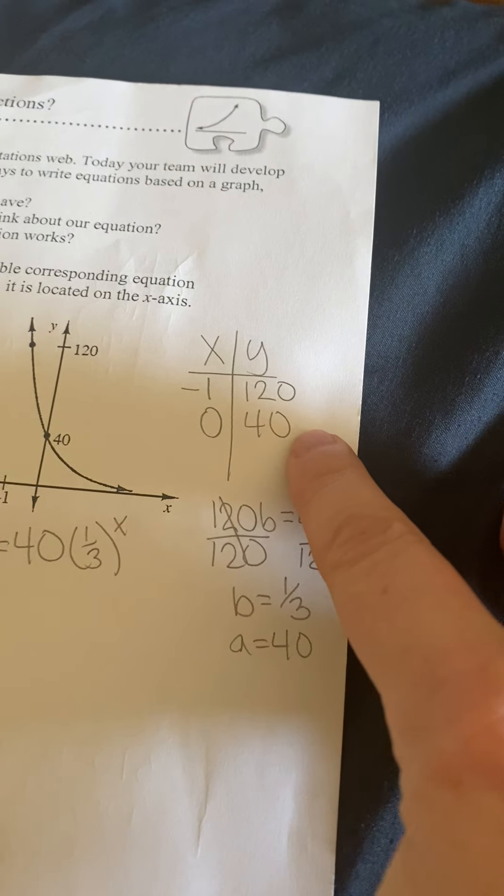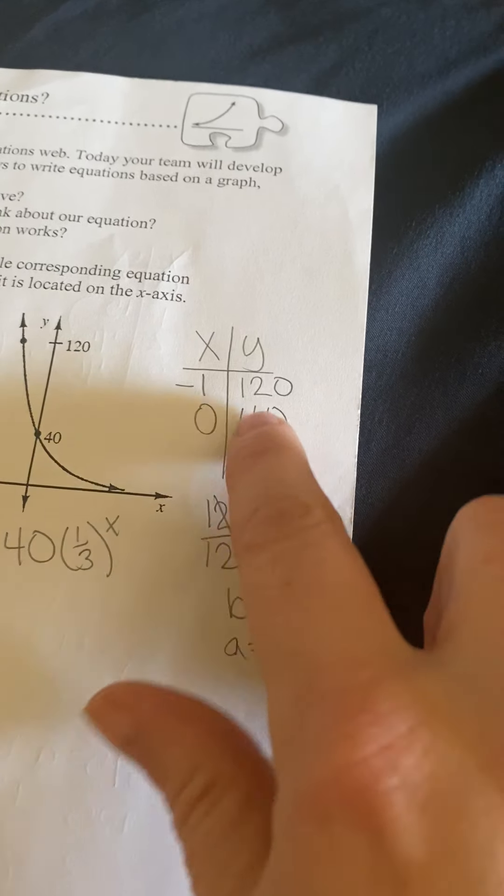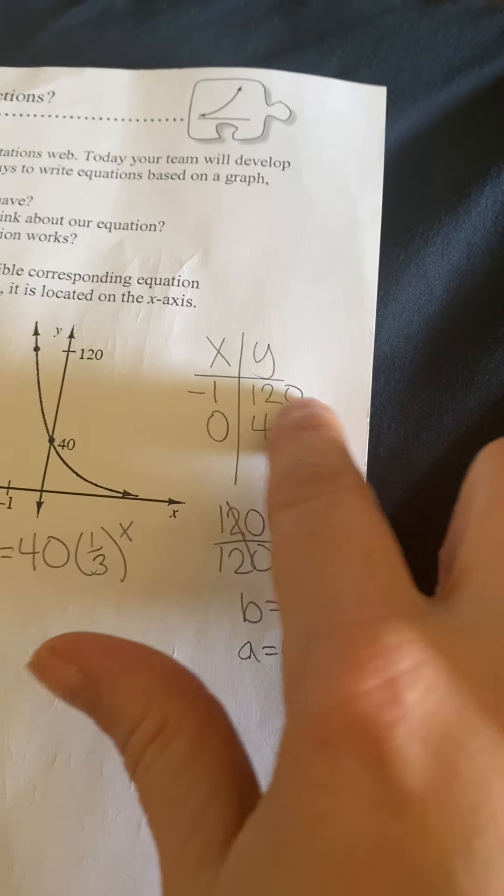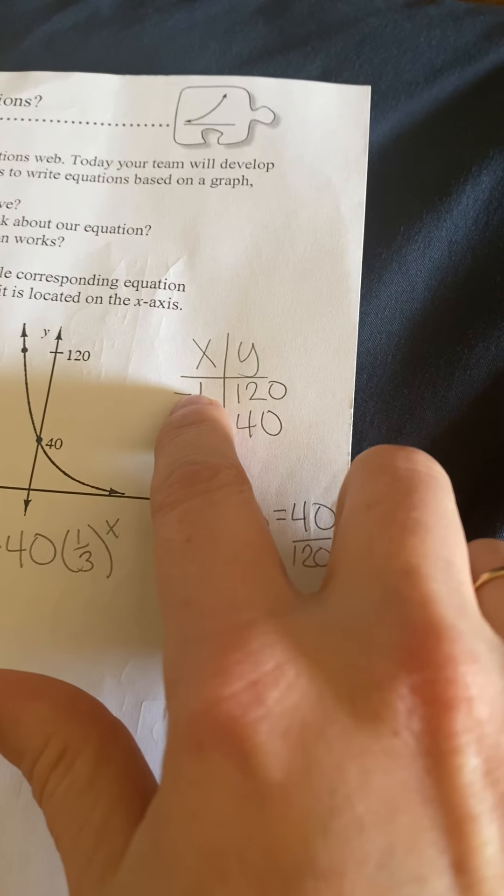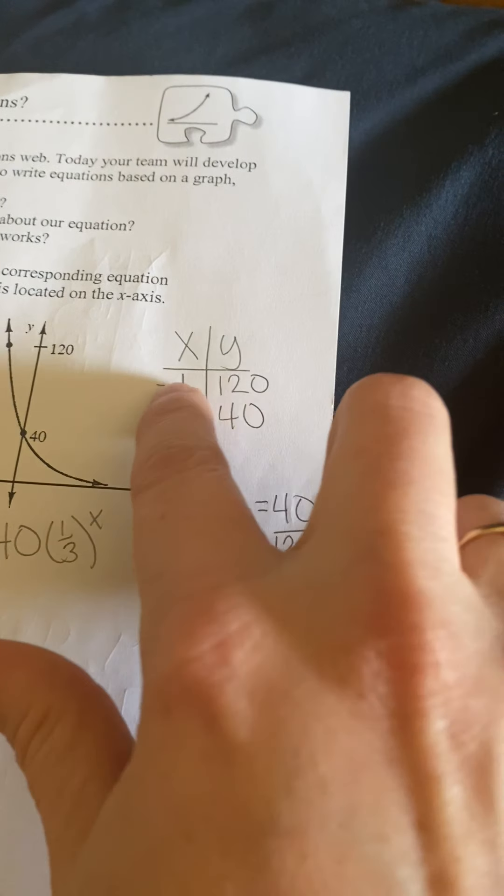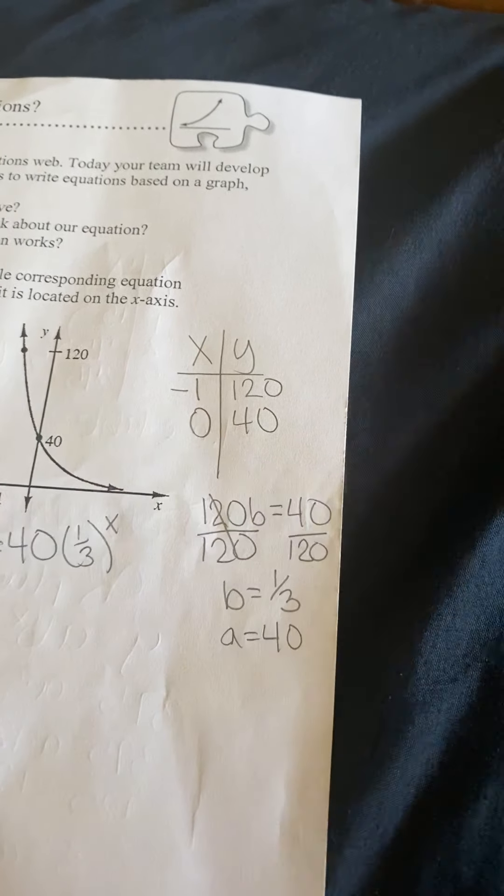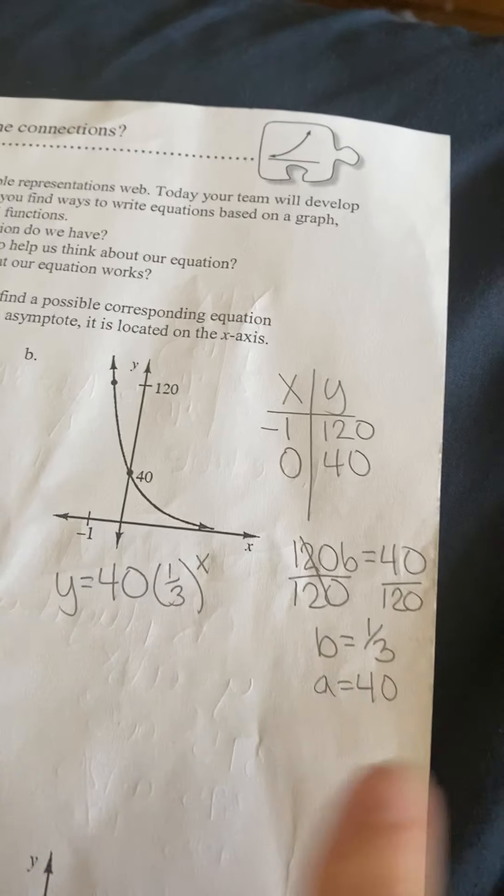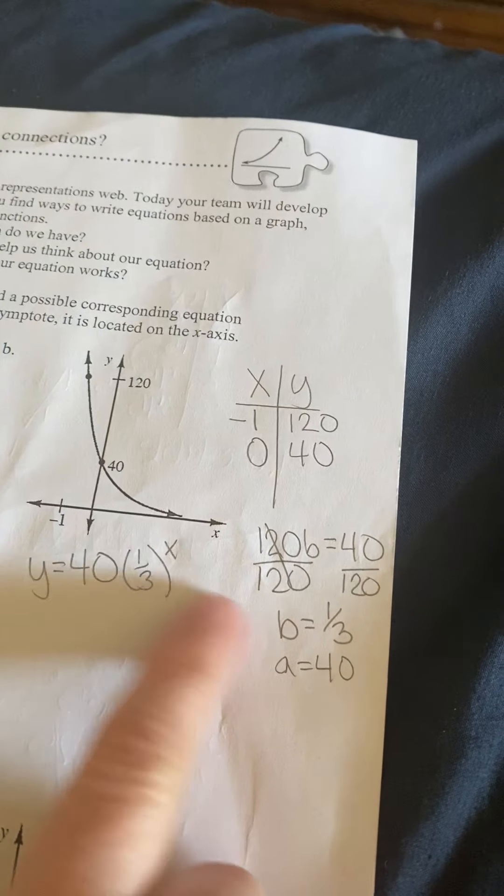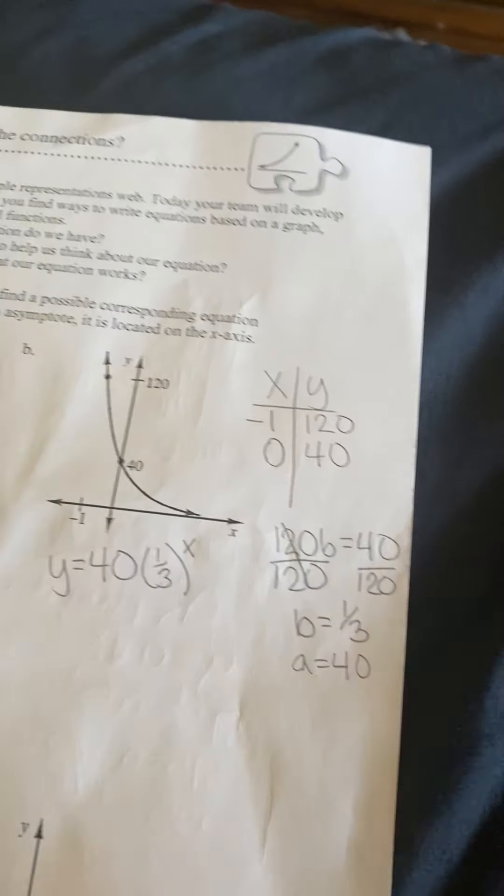So 120 times 1/3 is 40. And your original number, remember, that needs to be where x equals 0. So even though -1 is first, the original number is always where x equals 0. So a equals 40, b is 1/3 to the x.